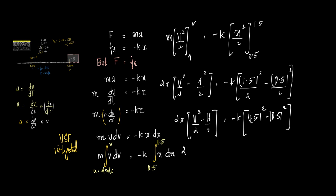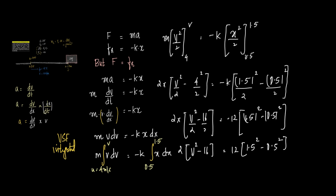What we get is 2 into, instead of k, we can write here 12. So this becomes 2 into v square minus 16 is equal to 12 into 1.5 square minus 0.5 square.